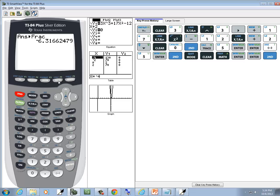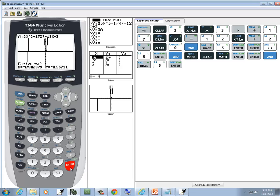So now I'll go back in, do second trace choose intersect, and we do enter on first curve, enter on second curve, and then we put zero in for the guess. Comes back and tells us .31662479. That won't change to a fraction either.